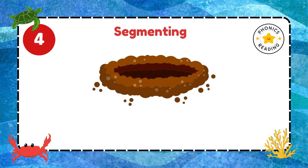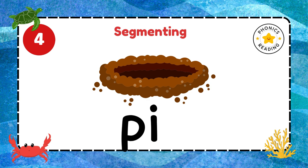Can you spell pit? Pit. What is the first sound in pit? P. Quickly write it. The second sound is I. Do you know how to write I? Yes. Pit. The last sound is T. Very good.